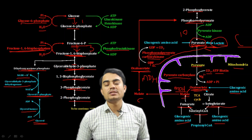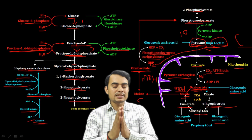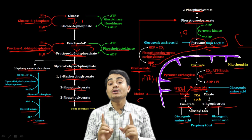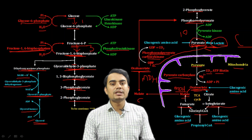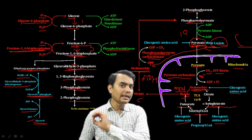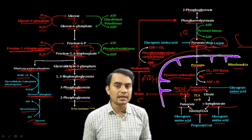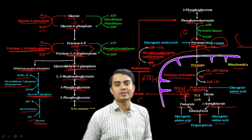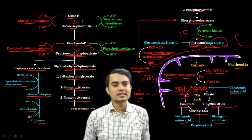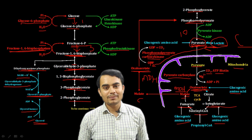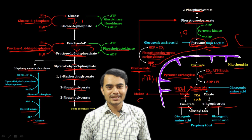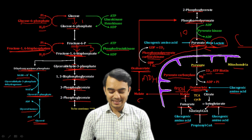This is a brief review of gluconeogenesis. The key point is that only three steps are irreversible — at those points, alternate enzymes and bypass reactions are used. For all the reversible steps, there is no issue — they proceed normally. Keep these irreversible bypass steps in mind, and the concept of gluconeogenesis will be very clear. Thank you.